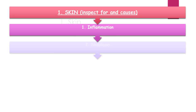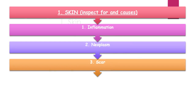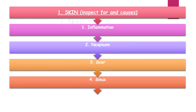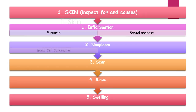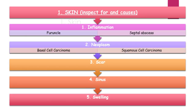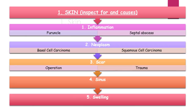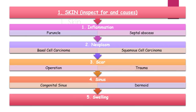Inspection of skin: in the skin you need to inspect for the following points — number 1: inflammation; number 2: neoplasm; number 3: scar; number 4: sinus; number 5: swelling. The possible causes are: inflammation — furunculo-septal abscess; neoplasm — basal cell carcinoma, squamous cell carcinoma; scar — operative scar, traumatic scar; sinus — congenital sinus, dermoid sinus.